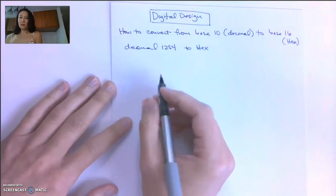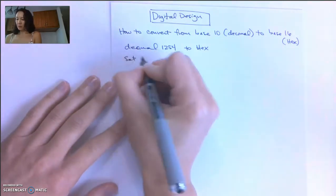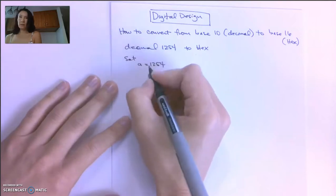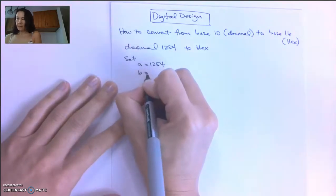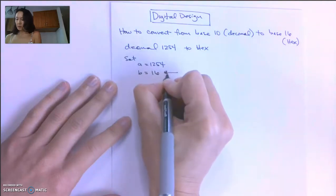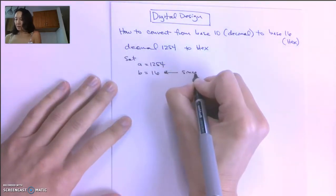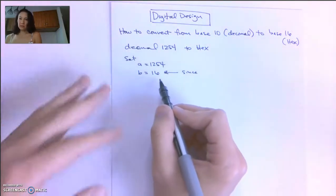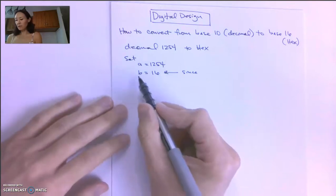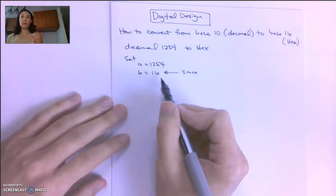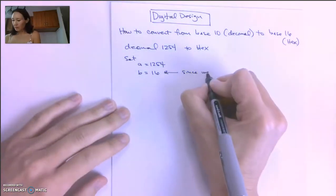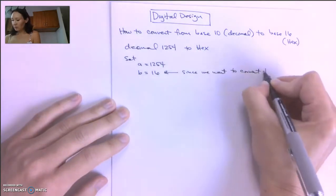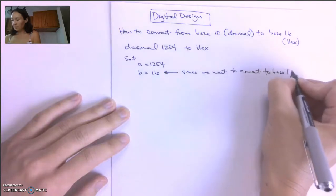Using the iterative division algorithm, the first thing we're going to do is set A equal to 1254 and set B equal to 16. The reason why we do this is we want to convert to base 16. When using this algorithm, we always set B to the base that we want to convert to.